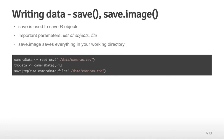Here's an example: we load the camera data, modify the data set to remove the first column, then pass save two objects — the temporary data set and the camera data set — along with the output file cameras.rda. The .rda extension is the usual extension for this binary format.